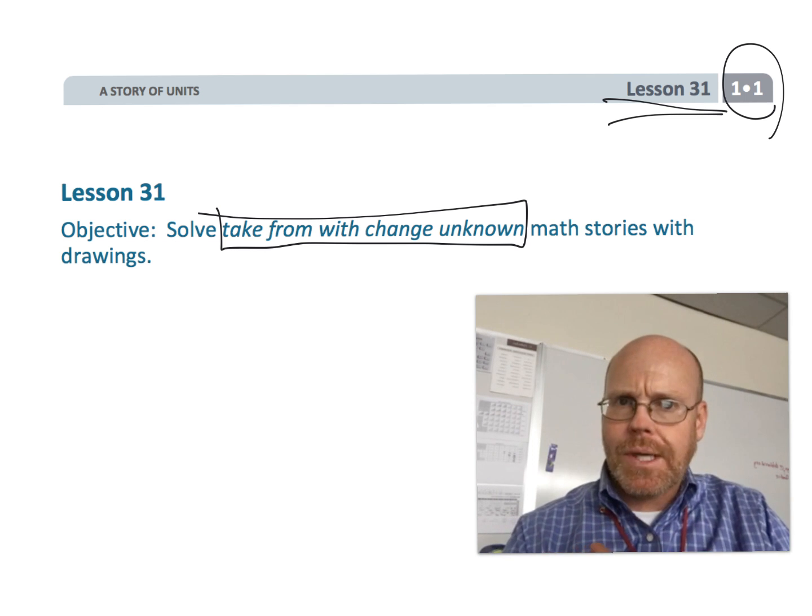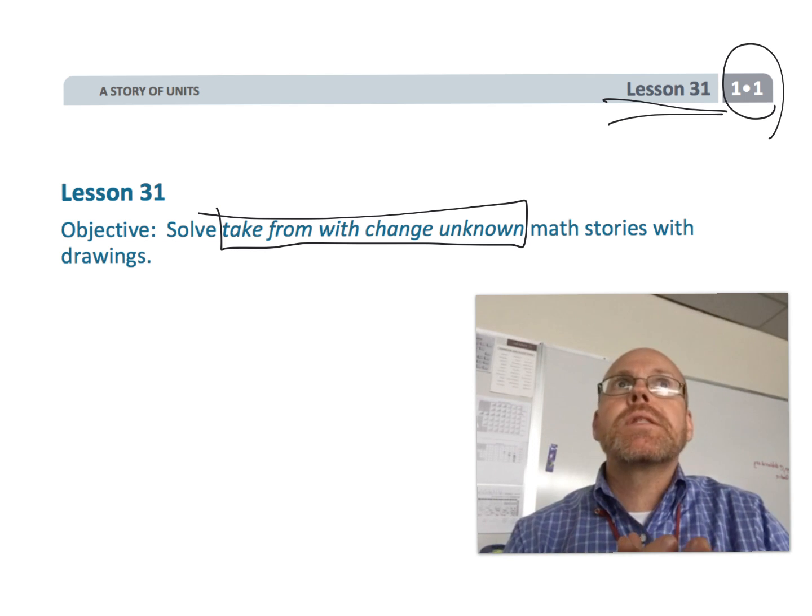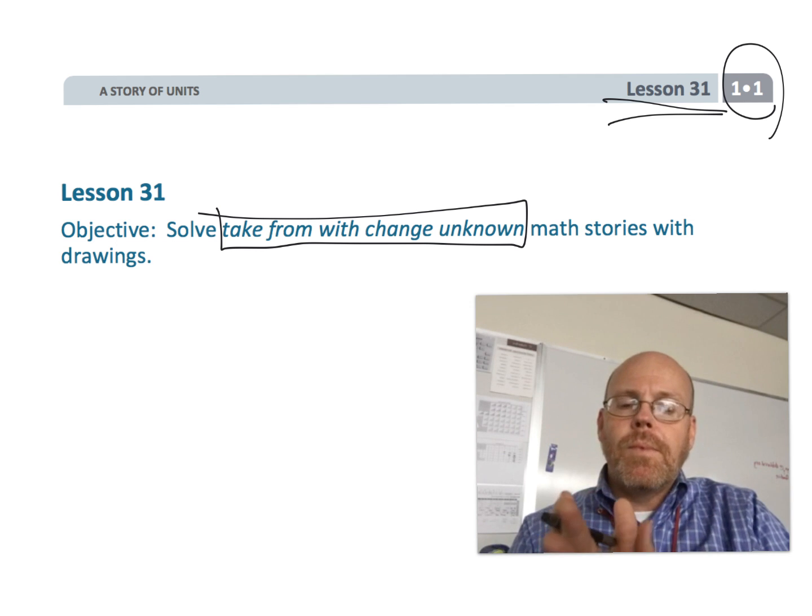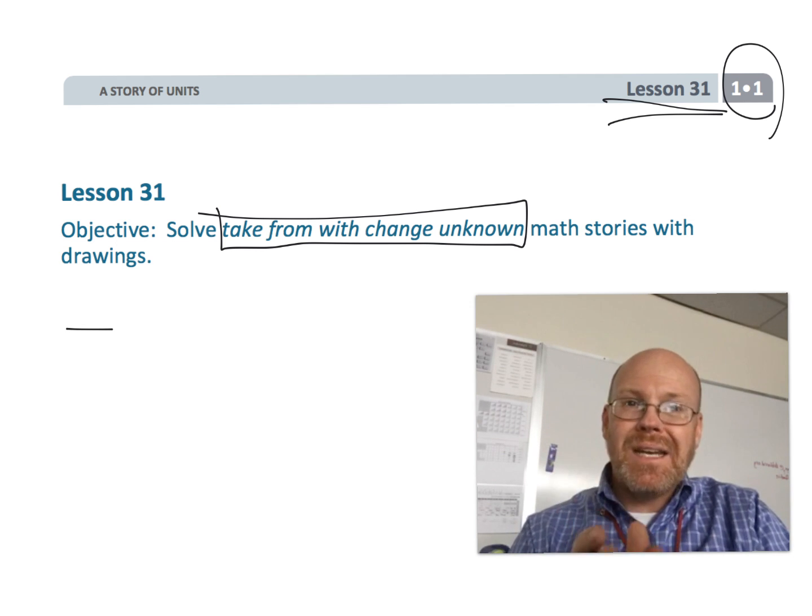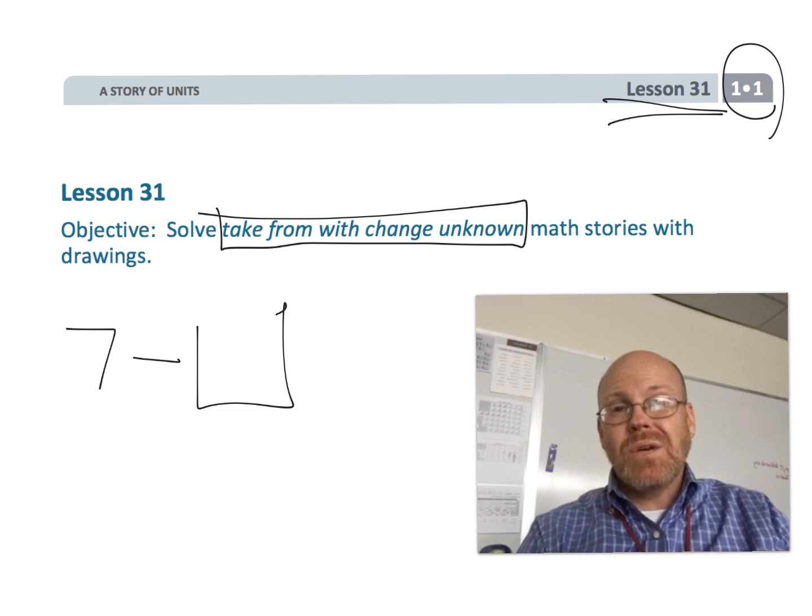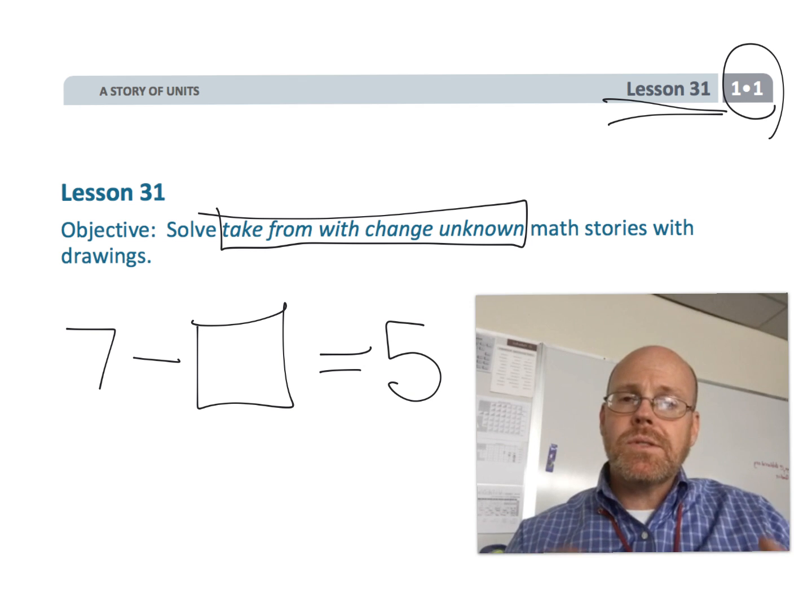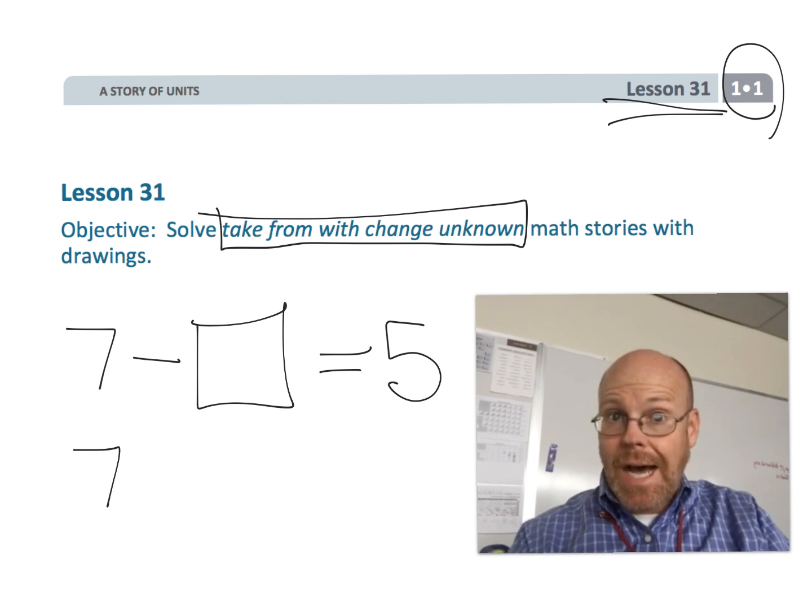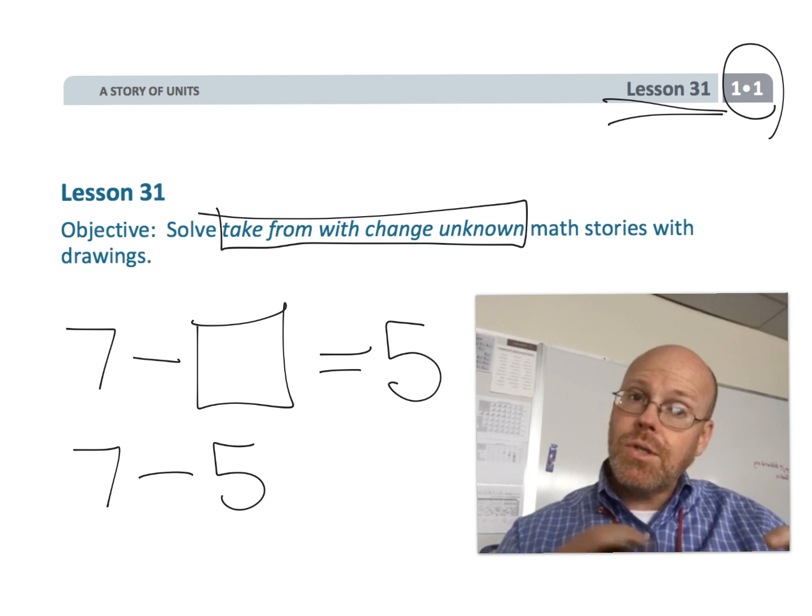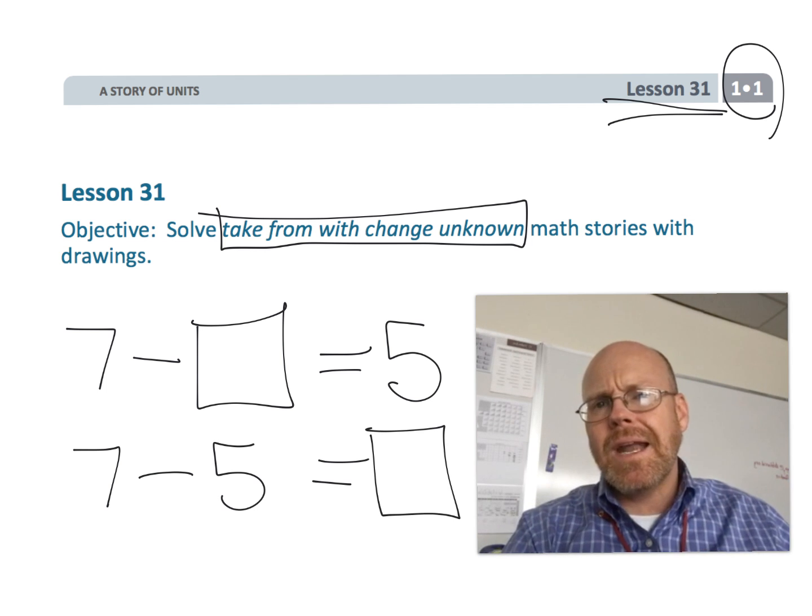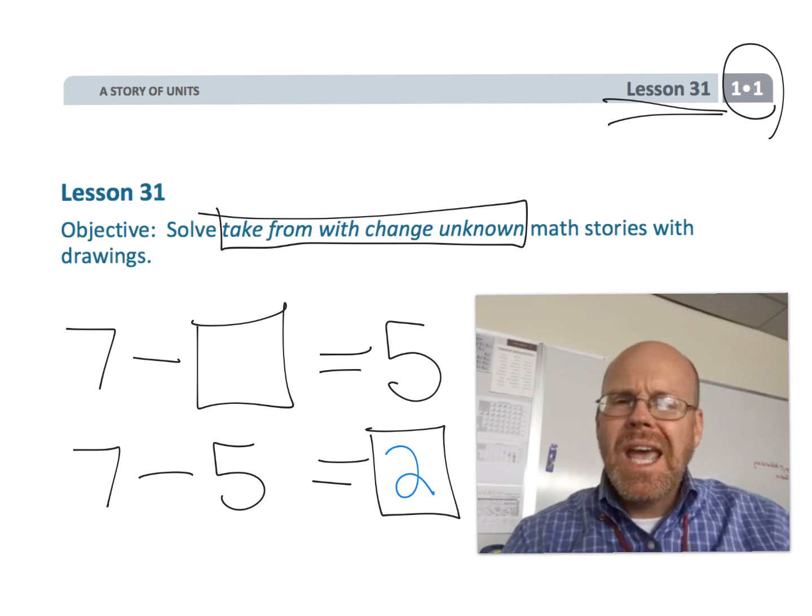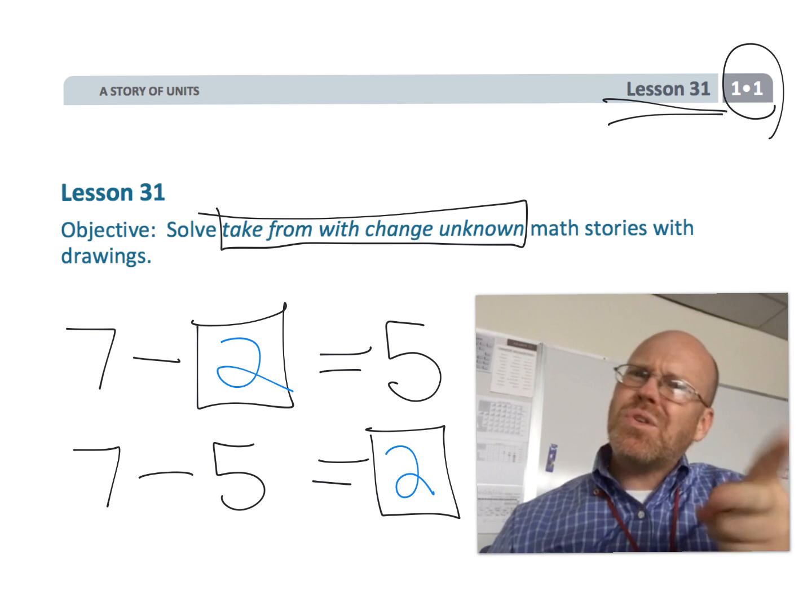We're going to be using math stories to model problems that really would be like 7 minus what equals 5. But the students are really going to write down the subtraction problem 7 minus 5 equals what, and we're going to use subtraction to find that unknown change and it's going to involve that little twist.